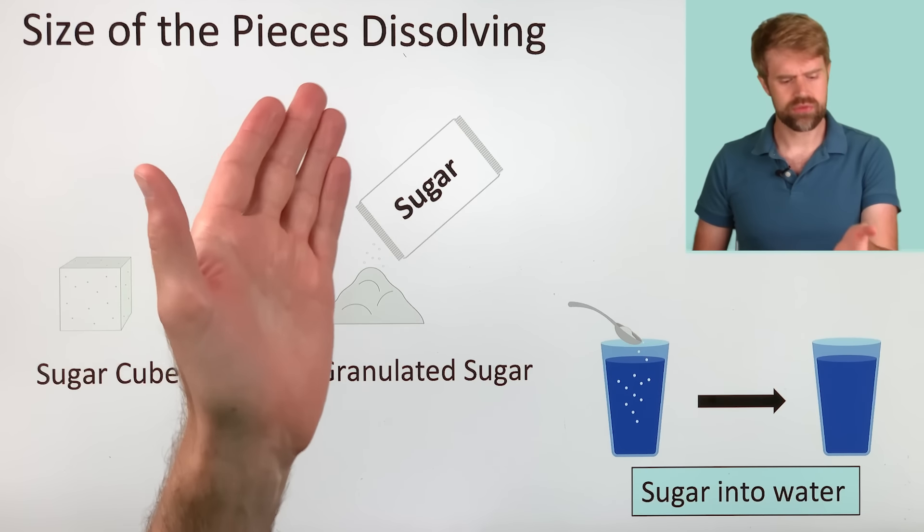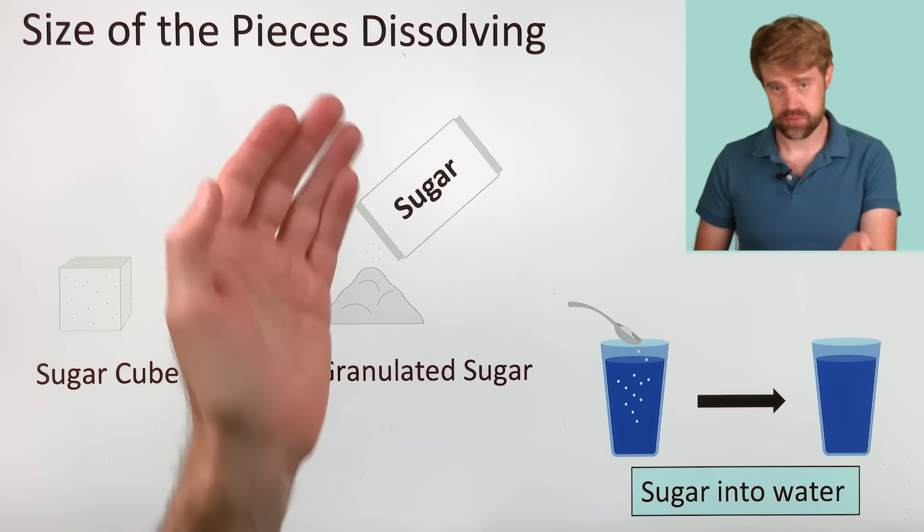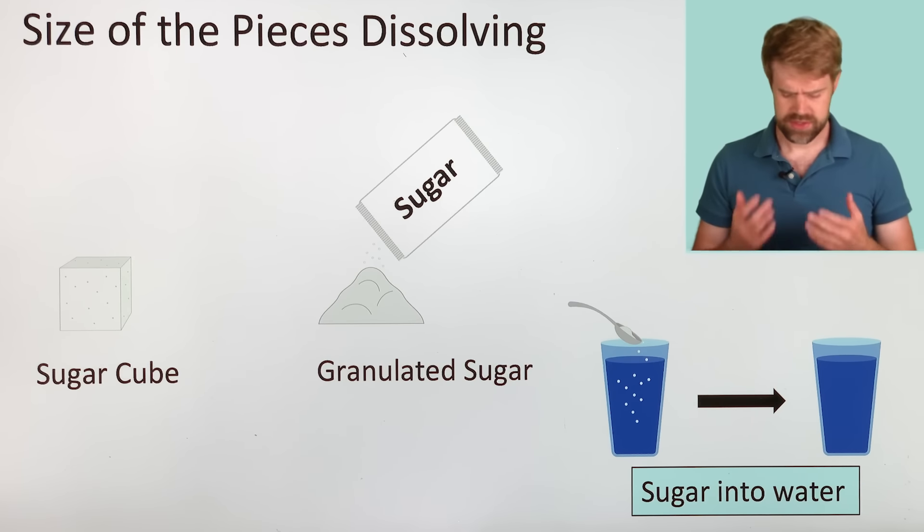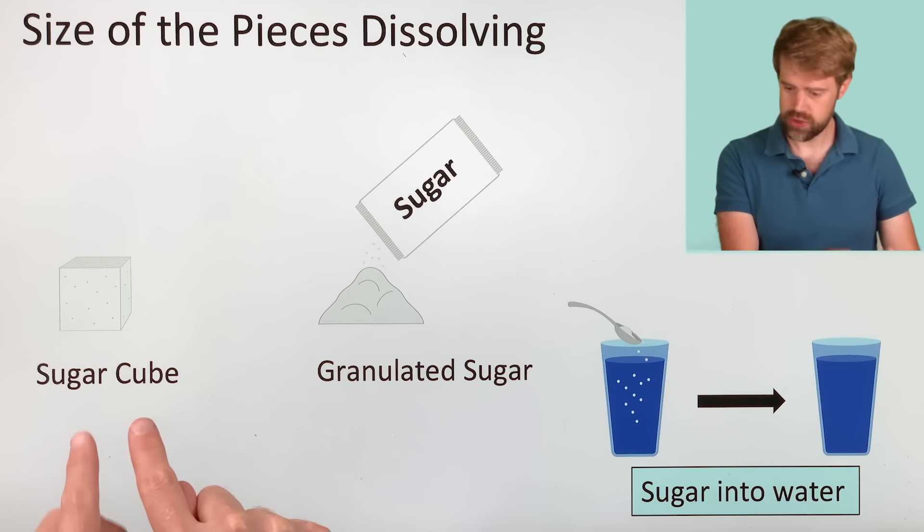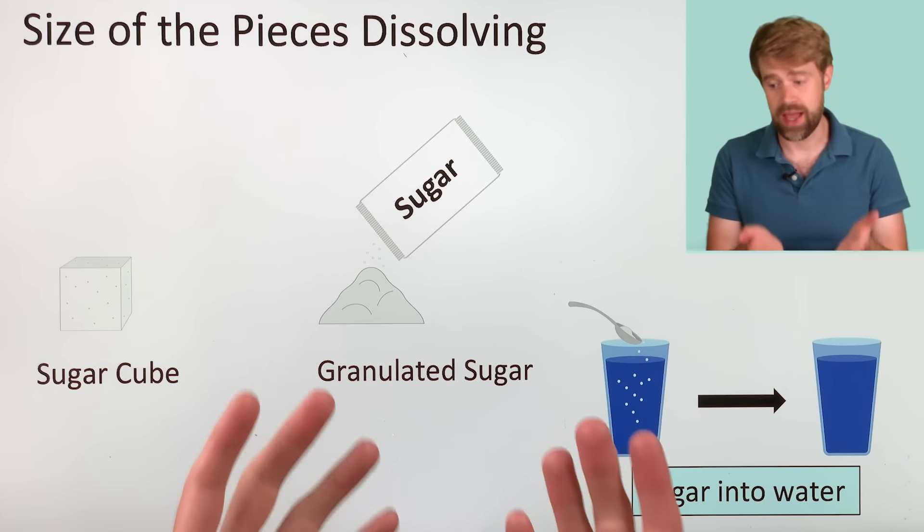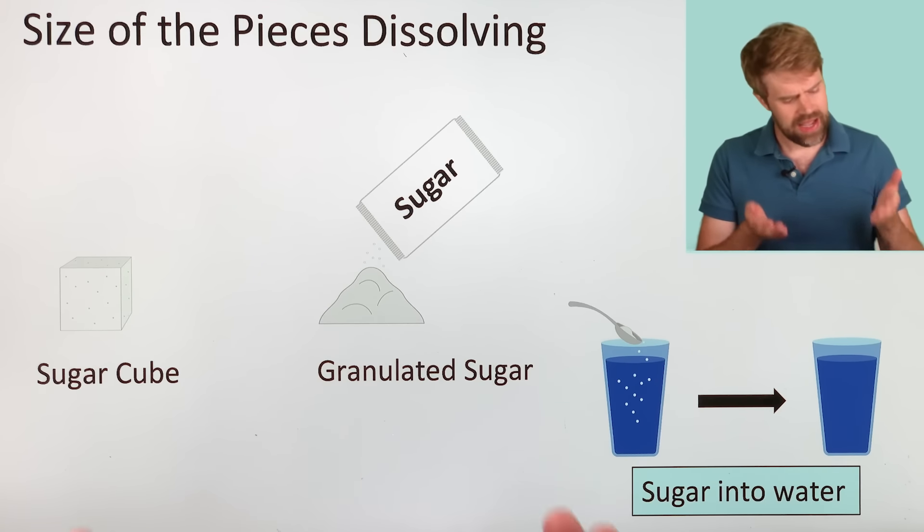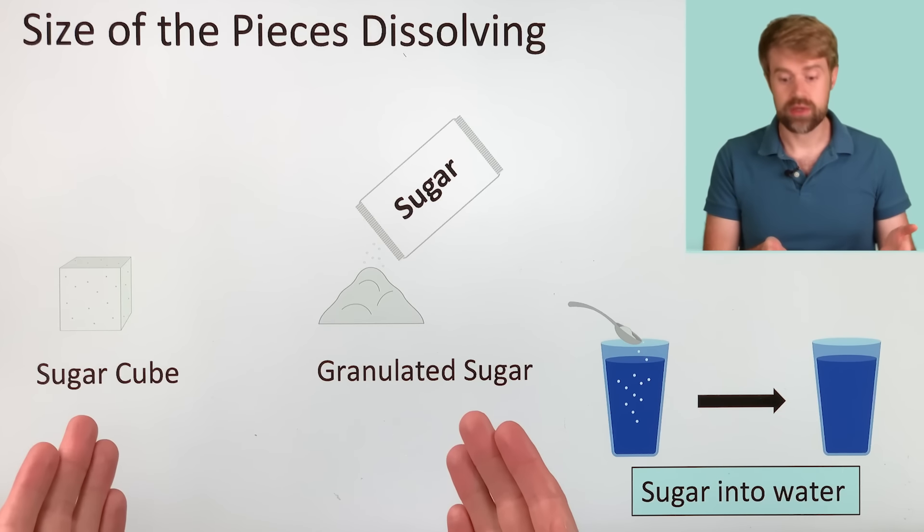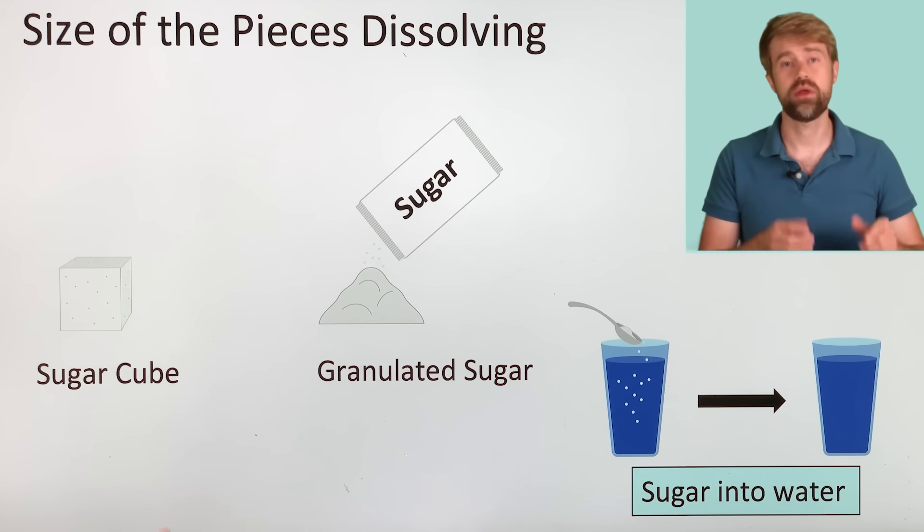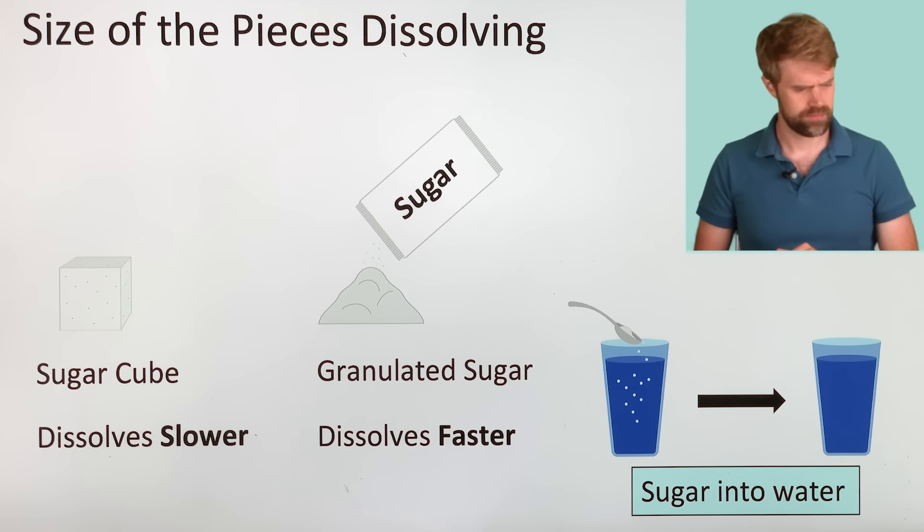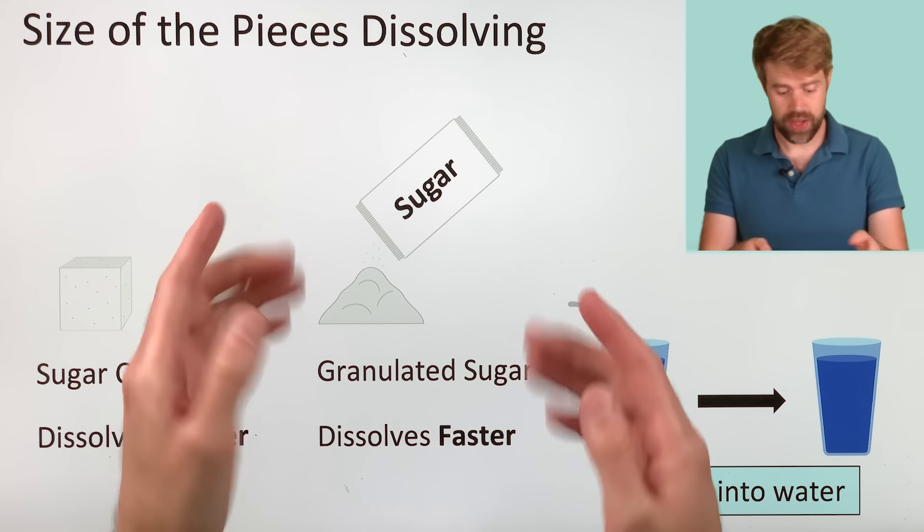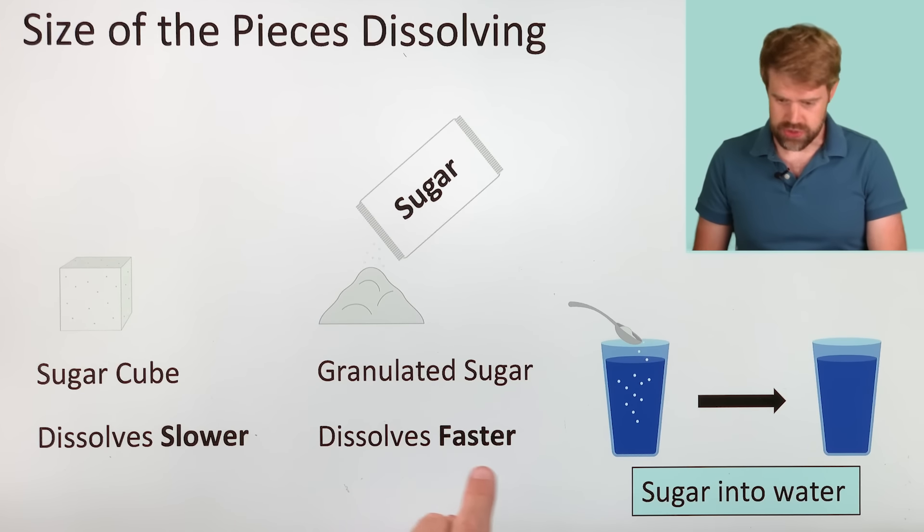Let's begin with the size of the pieces or particles that we're dissolving. Let's say we're dissolving sugar into water. This sugar can come in different forms. For example, we could have a sugar cube or we could have granulated sugar from a packet. We could have the same amount of sugar in these different forms, but each will dissolve at different speeds. The sugar cube will dissolve slower, and the granulated sugar will be faster to dissolve.